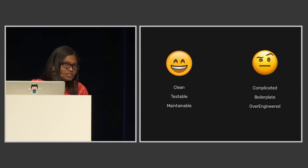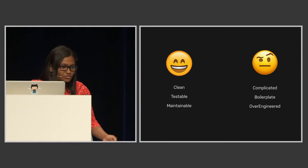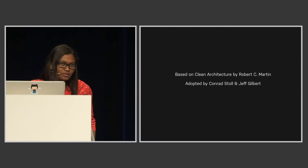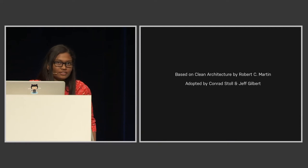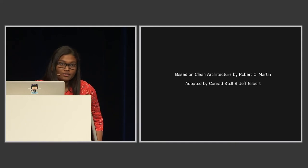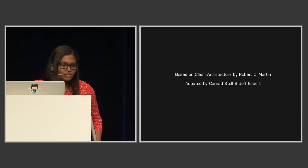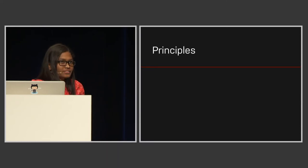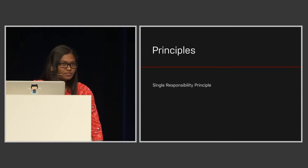I'll be explaining some of the techniques I used to simplify this architecture a bit, and how I overcame the limitations. Let's understand the philosophy behind this architecture. It was based on clean architecture proposed by Robert C. Martin, known as Uncle Bob, and first adopted by Kondas Stahl and Jeff Gilbert. You will find a very good article at obgc.io about it. This architecture is based on two important principles: the single responsibility principle and the dependency inversion principle.